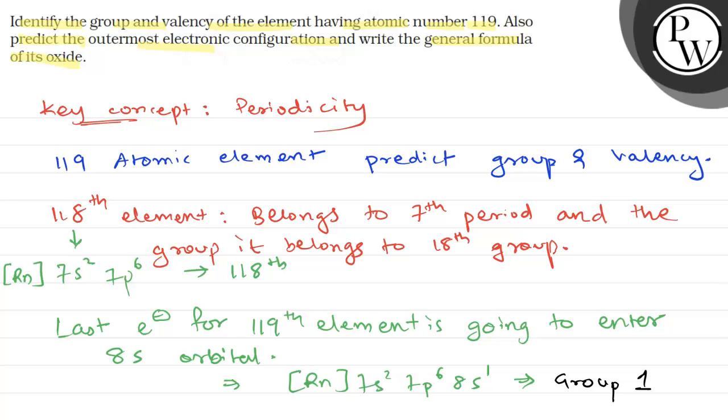And the formula of oxide, let the element be M. So M₂O. And to write the valency, valency will be equal to 1 in this case.